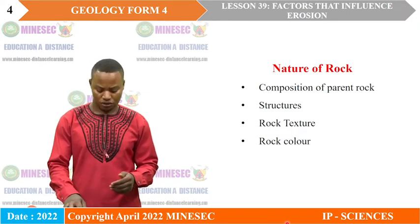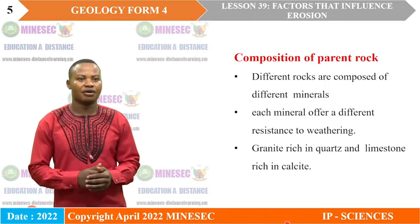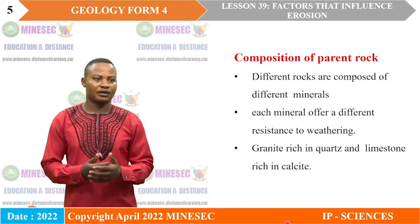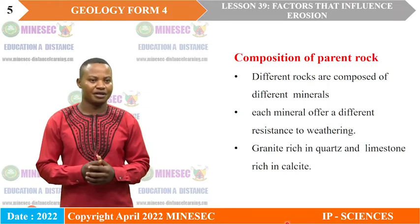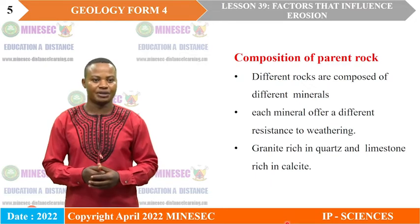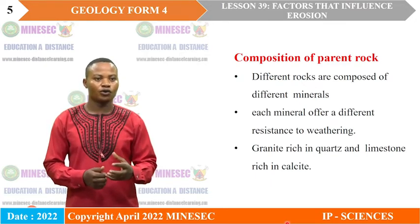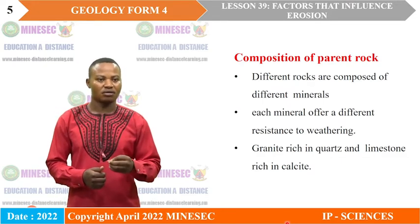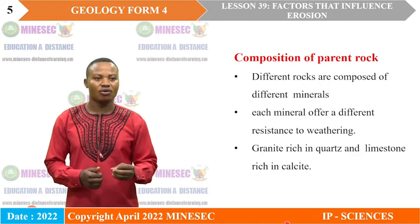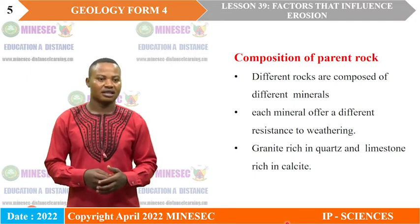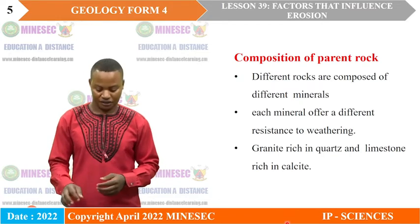Different rocks at the surface of the earth are composed of different minerals, and these different minerals have their different susceptibility to weathering. When a rock is composed of less resistant minerals like olivine or calcite, that rock will easily be weathered. Whereas when a rock is composed of resistant minerals like quartz and zircon, that rock will resist weathering.